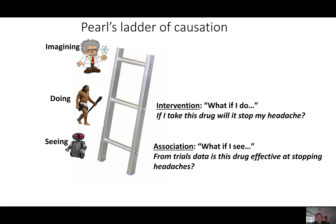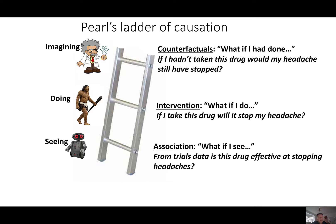At level two, we learn by doing. This way we can learn about interventions, such as: if I take this drug, will my headache stop? Or in the bank example, if I'm unemployed, will I default on a loan? At level three, we learn by imagining. This is where we learn about counterfactuals, such as: if I had not taken the drug, would my headache have stopped anyway? Or in the bank example, if I'd been employed, would I have still defaulted on my loan?